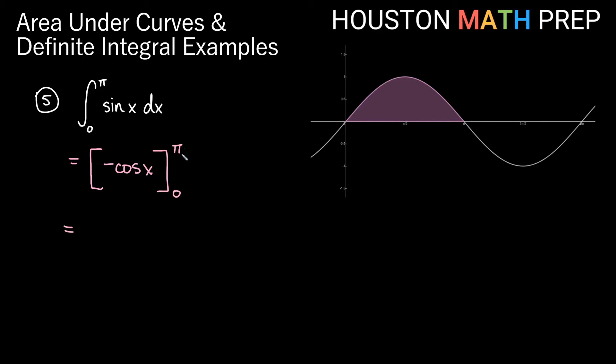Make sure you do it in the correct order. So plugging in pi first, we'll get negative cosine of pi minus, plugging in the lower bound, negative cosine of 0. Let's figure out what each of these are. Cosine of pi, that's on the left side of the unit circle. So cosine of pi itself is already negative 1, but I have a negative in front of that, so that's actually positive 1.